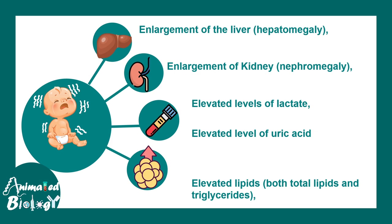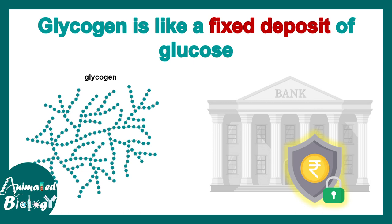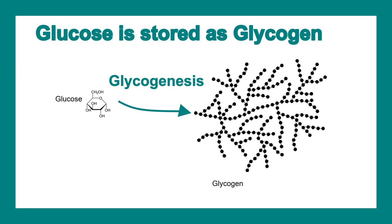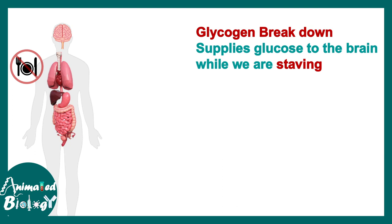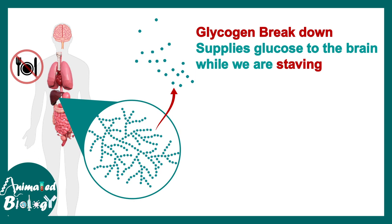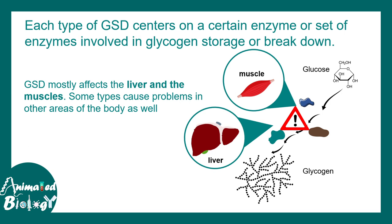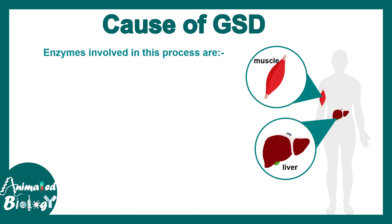To understand why these things are happening, consider that glycogen is like a fixed deposit for glucose — whenever you need glucose, glycogen can be broken down to provide it. Glucose can be stored as glycogen via glycogenesis, and the opposite process, glycogenolysis, breaks down glycogen to produce glucose. This is very relevant during fasting, when glycogen in the liver must be broken down to give the brain the necessary energy. If glucose is insufficient, it leads to a hypoglycemic situation, which is detrimental for the brain. All GSDs are characterized by faulty enzymes in the glycogen pathway, generally affecting organs with glycogen storage, like the liver and muscles.